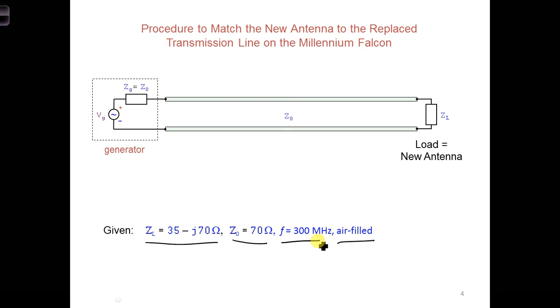We want to use the Smith chart to figure out what circuit element to add in parallel with the load and how far it needs to be from the load in order to match the antenna to the transmission line. How can we do this?